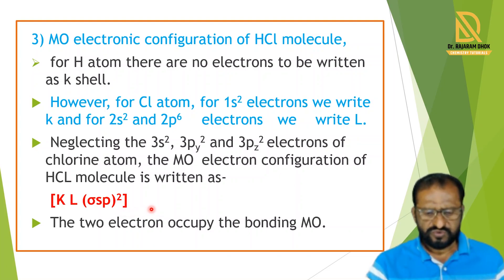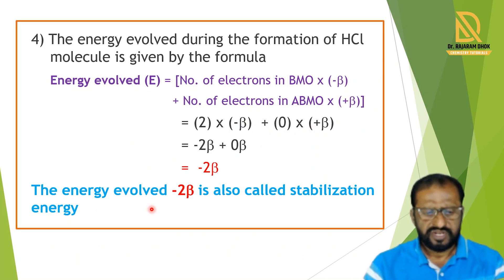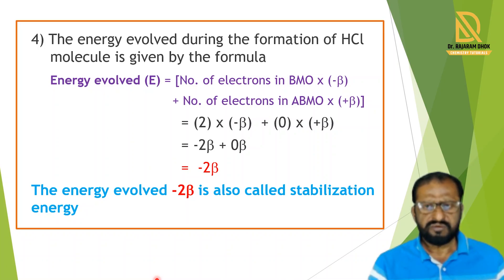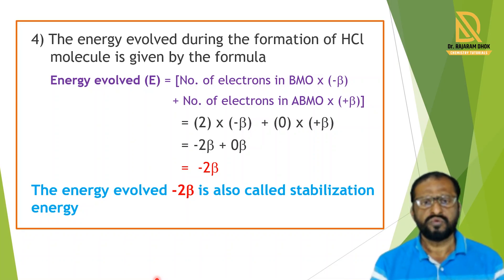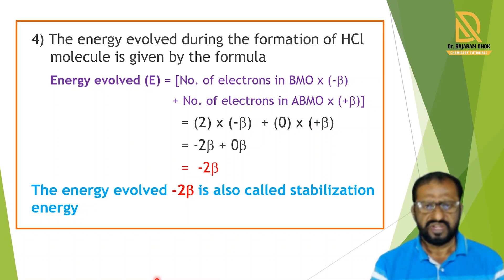These two electrons occupy the bonding molecular orbital and form one bond. The energy evolved in the HCl molecule is calculated by the formula: energy evolved = (number of electrons in bonding MO × −β) + (number of electrons in antibonding MO × +β). With two electrons in bonding MO and zero in antibonding MO, we get 2×(−β) + 0 = −2β. So −2β energy is evolved in HCl, which is the stabilization energy of the HCl molecule.